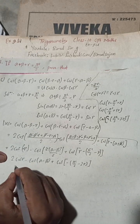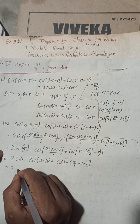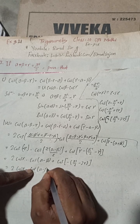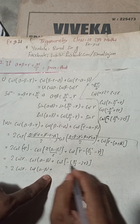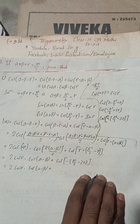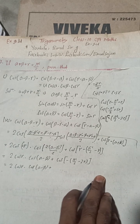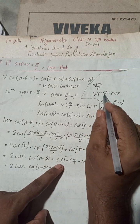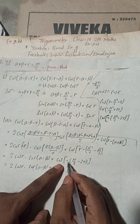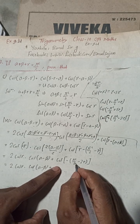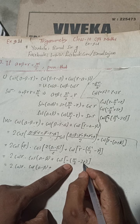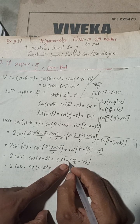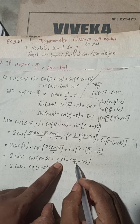So we have 2 cos gamma multiplied by cos(alpha minus beta), plus cos(pi/2 minus 2 gamma). The minus rule: cos(minus theta) equals cos(theta), so this minus vanishes and we get cos(pi/2 minus 2 gamma), which we can directly apply or simplify in one step.